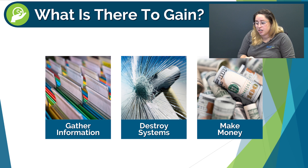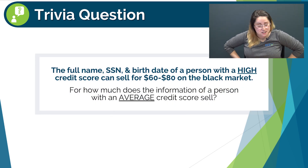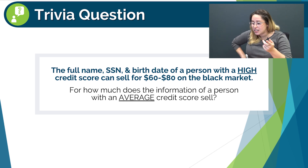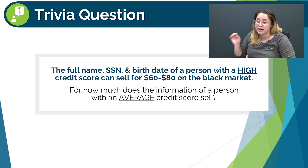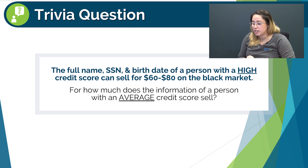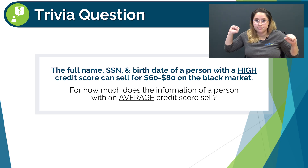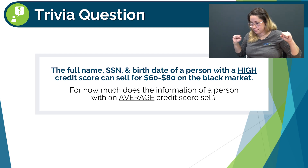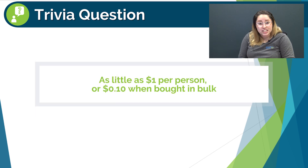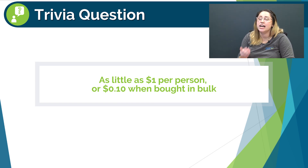Or two, using the information to conduct identity theft for profit. Here's a trivia question: the full name, social security number, and birth date of a person with a high credit score can sell for $60 to $80 on the black market. For how much does the information of a person with an average credit score sell? The answer: the full name, social security number, and birth date of a person with an average credit score can sell for as little as $1 per person, or 10 cents when bought in bulk.